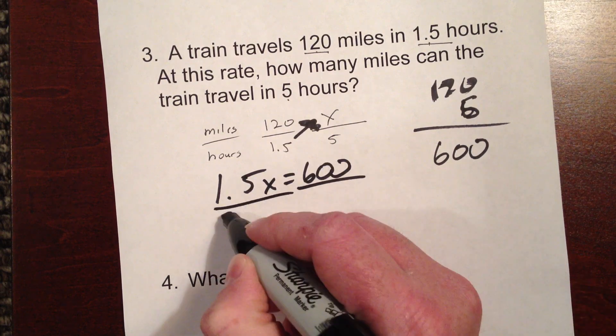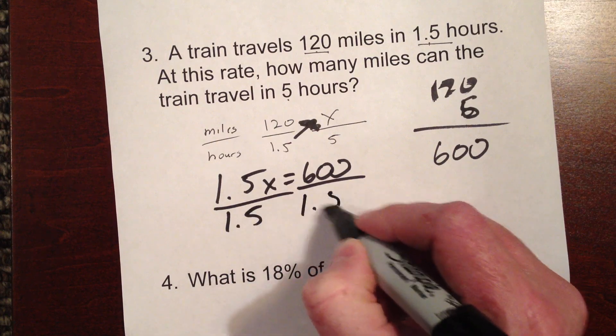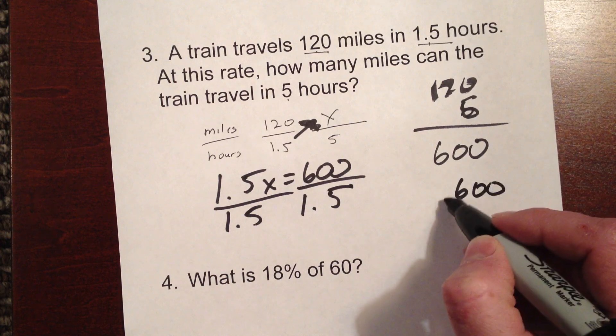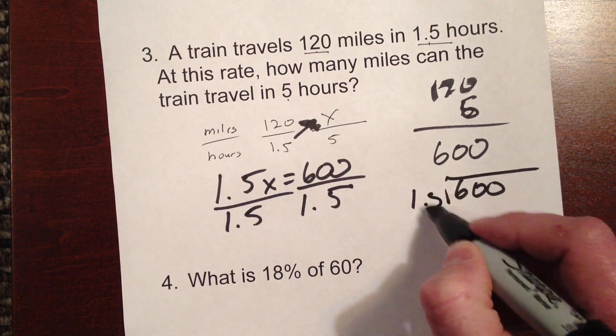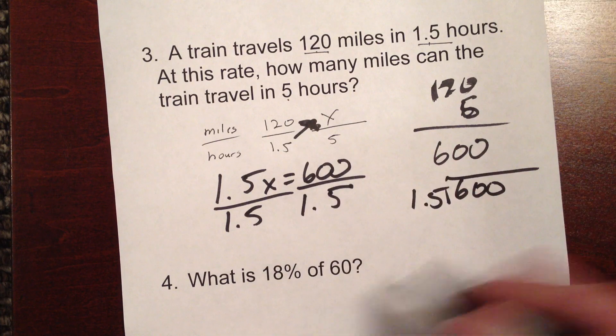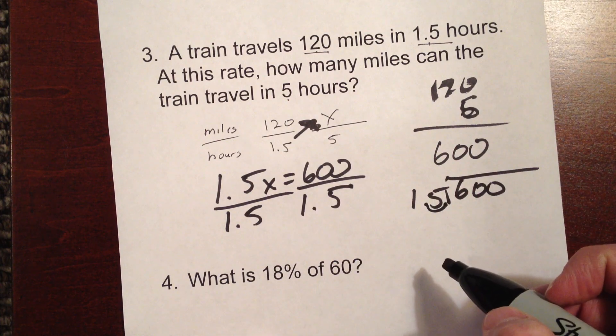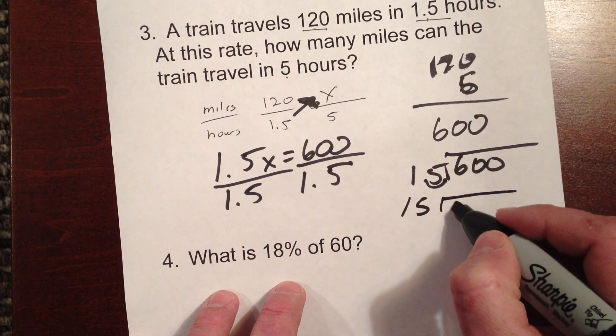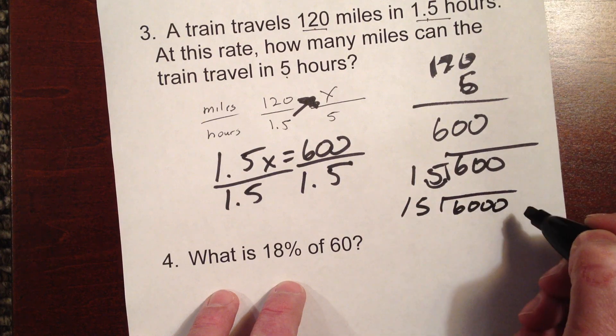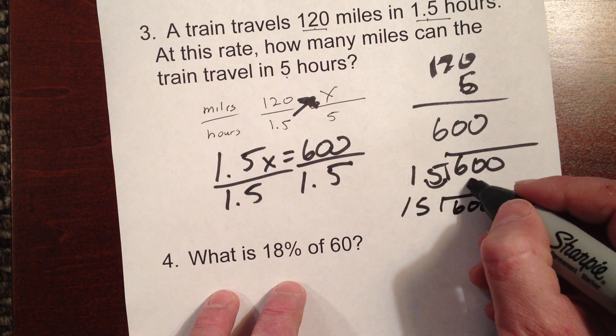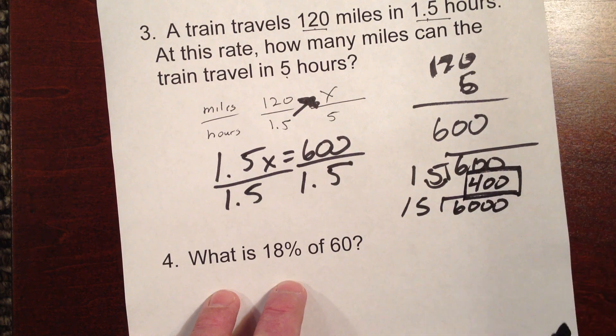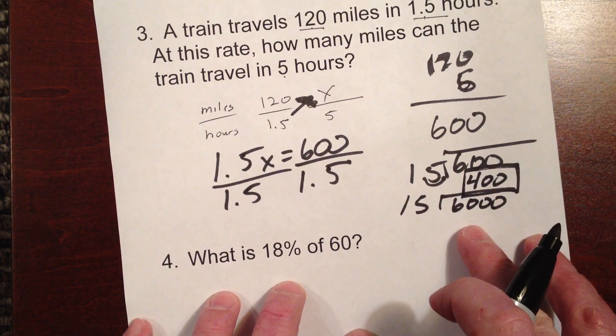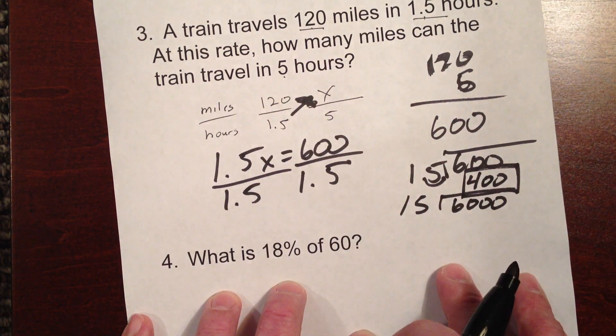We're going to divide both sides by 1.5, just like we've been doing all last week. And so now we've got 600 in the house and 1.5 outside of it. Well, we can't do that, of course. We have to move this decimal over once. So we're going to end up with 15 into 6,000. And this is going to go in here, of course, 400 times. Trust me on the math on that. So the train can travel 400 miles in five hours. And that's how you would do that one.